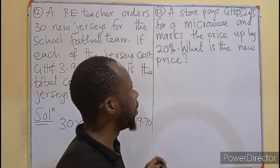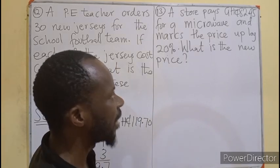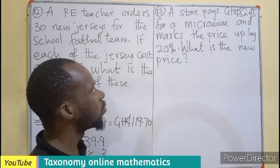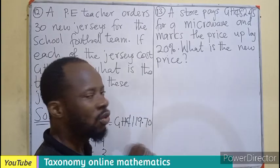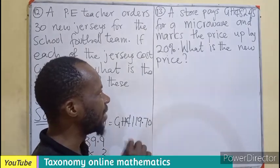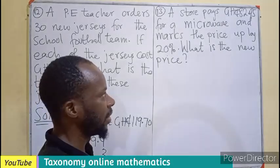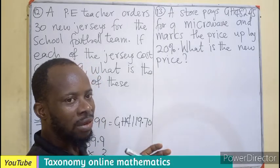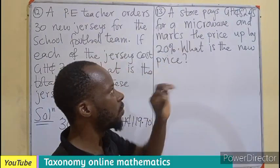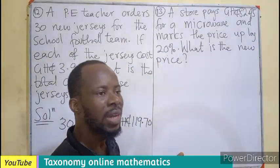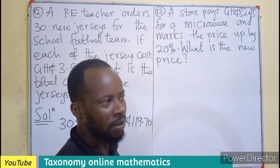A store pays 82.95 cedis for a microwave and marks the price up by 20%. What is the new price? In this case, you are doing retailing. After you buy the microwave at the cost of 82.95, you wanted to make a profit.